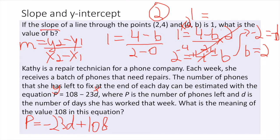The b value here is 108. The y-intercept can also be called the initial value or starting point. So 108 is the initial value of this equation, which means that at the beginning of each week she has 108 phones to fix.